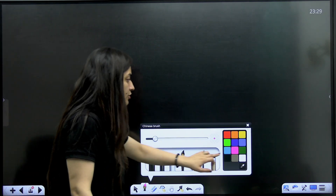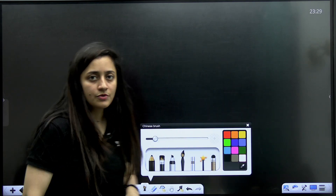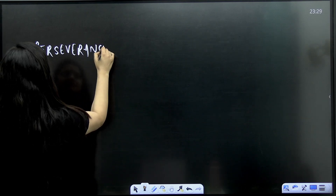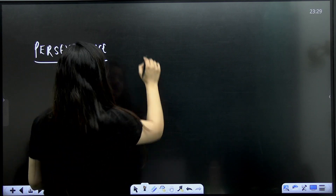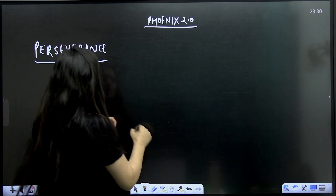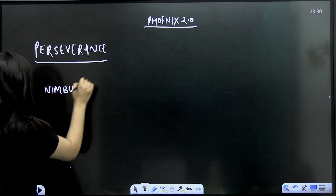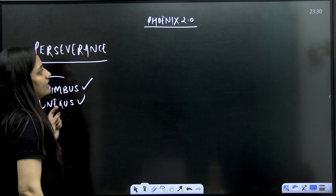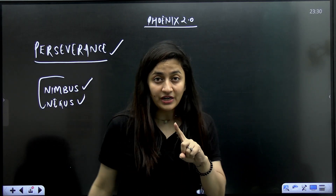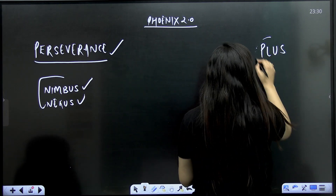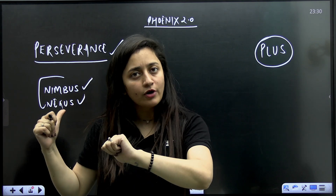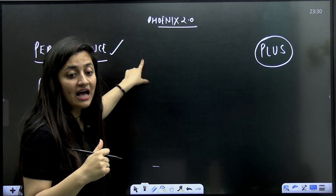Ultimately, it's all about your preparation, strategy, consistency, and most importantly your perseverance — that is the most important thing to keep in mind. For droppers, we have the Phoenix 2.0 batch. For class 11 students, the Nimbus batch is going very well, and for class 12 the Nexus batch is also going well. This time, with the Plus subscription, you don't need to buy these batches separately — you'll have access to all batches.